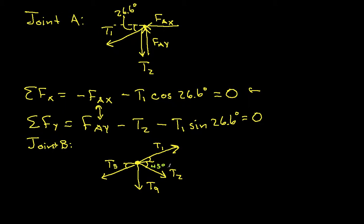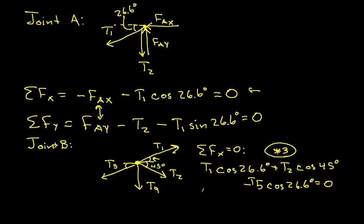Okay. Well, let's sum the forces in the X direction. So I sum the forces in the X direction. And so we'll have then T1 cosine 26.6 degrees. That's basically this angle right here. Plus T2 cosine 45 degrees minus T5 cosine 26.6 degrees is equal to 0. And we'll call this equation star 3. So we're going to copy it over to our other page in just a second.